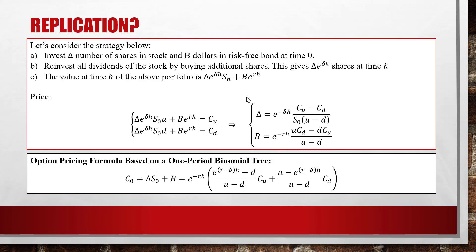Substituting Δ and B in, we get: C₀ = e^(−rh) · [ (e^((r−δ)h) − d)/(u−d) · cᵤ + (u − e^((r−δ)h))/(u−d) · c_d ]. However, you don't have to memorize this complicated formula. All you need to memorize is C₀ = Δ·S₀ + B, because you would calculate Δ and B first and then just plug them in — no need to memorize the full expanded formula.